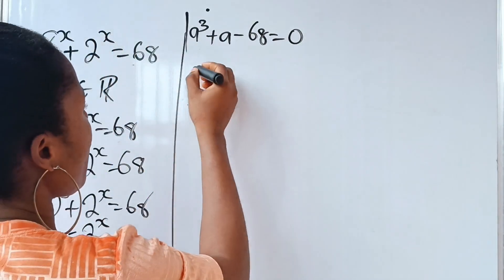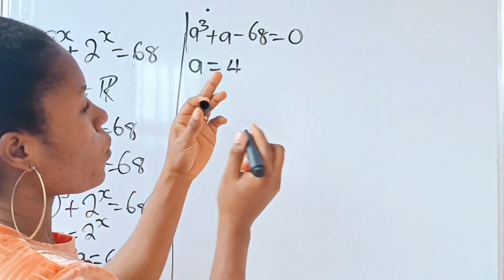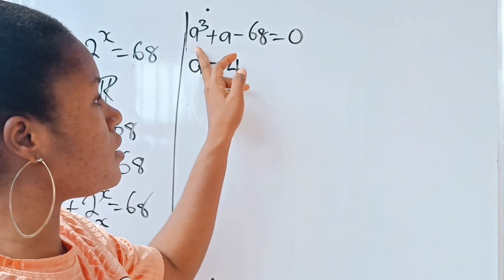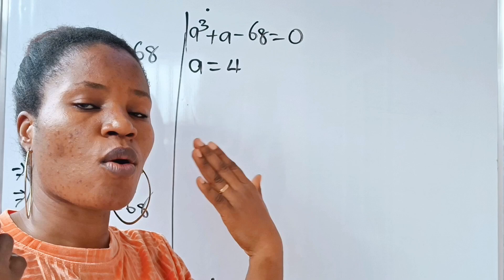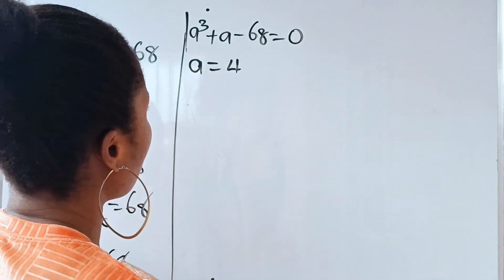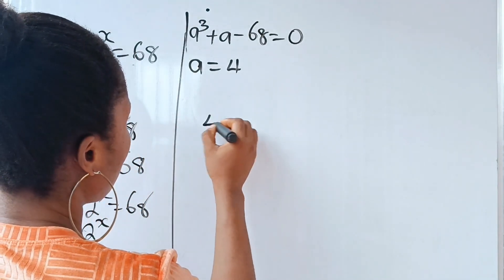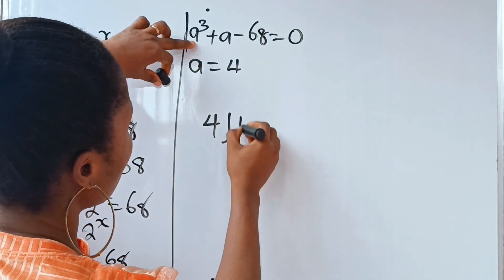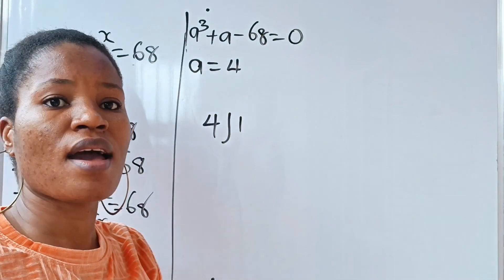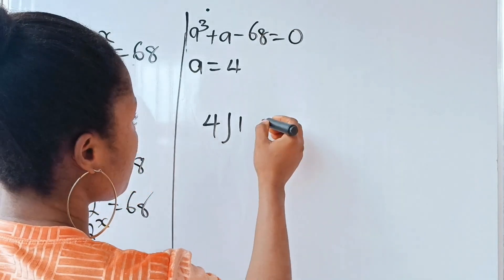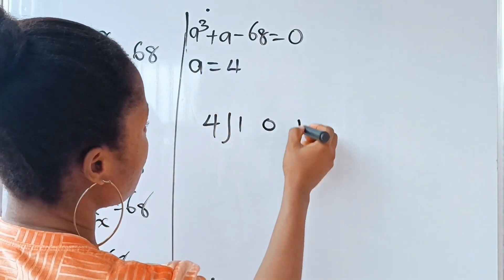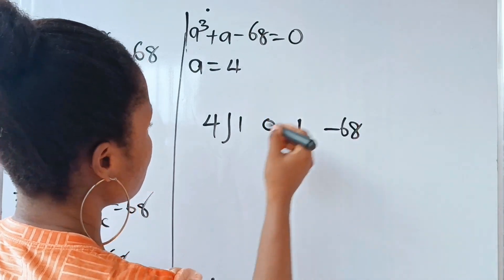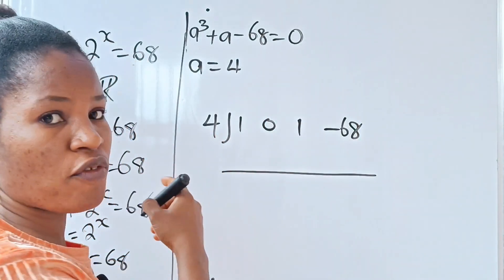Since a equals 4 is a root, we'll use synthetic division to find the remaining factor. The coefficients of a³ + 0a² + a − 68 are: 1 (for a³), then 0 (for a², since that term is missing), then 1 (for a), and then −68 as the constant. We are going to divide through by 4.